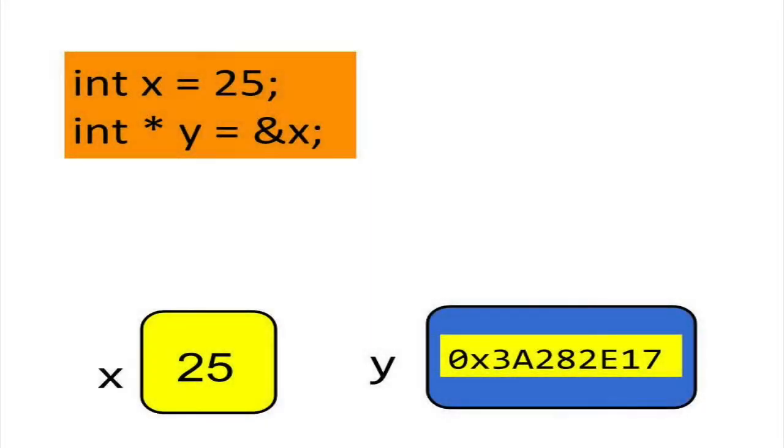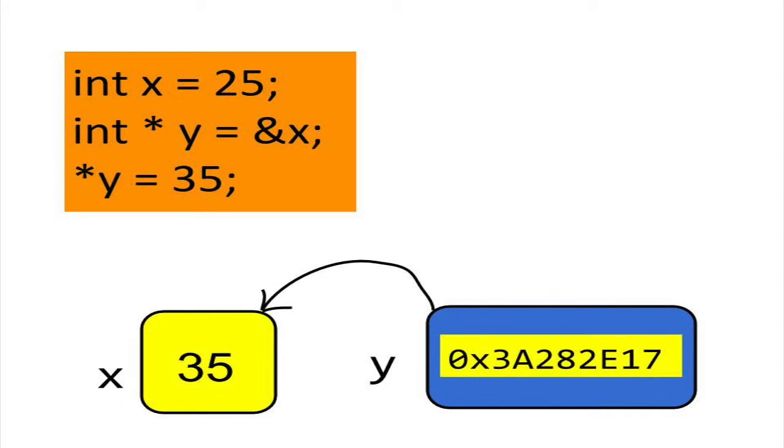Not only can you get the contents of a variable indirectly with pointers, you can also change the contents. Here is an example. Suppose we want to store the number 35 in x, instead of 25. We can reset the variable x using pointer y. Now variable x contains the number 35.